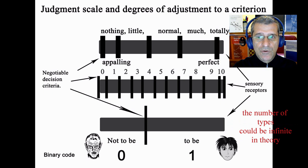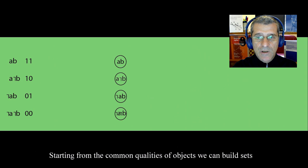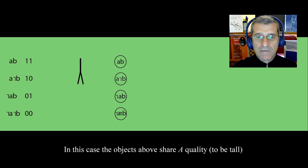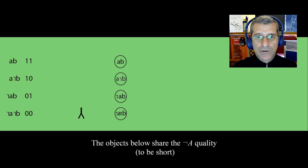Starting from the common qualities of the objects, we can bring sets. In this case, the objects above say the quality A, to be tall. The objects below say the quality not A, to be short. With the common qualities, we generate the OR nodes.